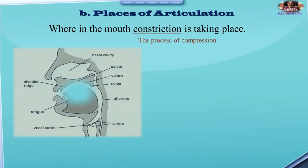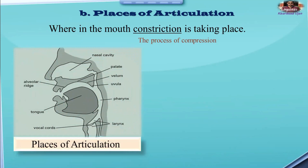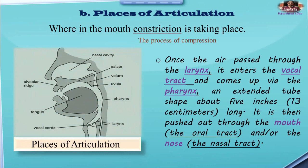Here is the diagram. If you look at it, we are going through how this construction takes place. Once the air passes through the larynx — this is the larynx — the air comes from the lungs and passes through the larynx into the vocal tract. It then comes up via the pharynx, an extended tube shape about 5 inches (13 centimeters) long, and is then passed out through the mouth, or through the nose via the nasal tract. This is how articulation occurs.